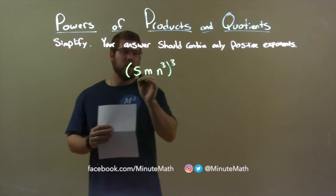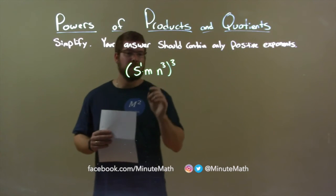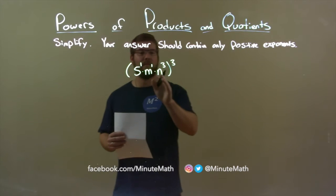Well, 5, we know, is raised to the first power. Multiplication between 5 and m, and m is also raised to the first power. Multiplication, again, between m and n to the third power.